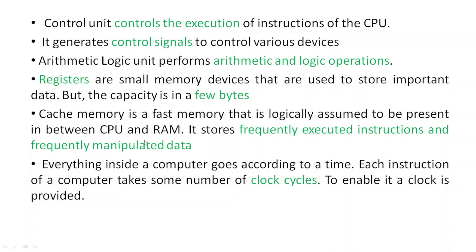Cache memory is used to increase the speed of execution. RAM is relatively slow compared to the CPU, so to speed up execution, some contents of RAM are placed in cache memory so the CPU can quickly access them. Frequently executed instructions and frequently manipulated data are placed in cache memory, though cache memory is limited. Everything inside a computer is timed by a clock, and each instruction takes some number of clock cycles.